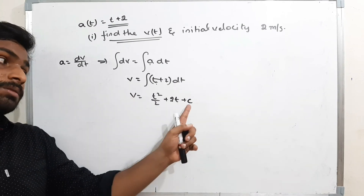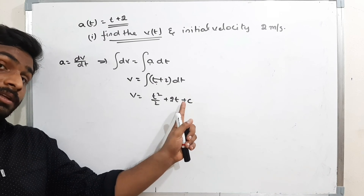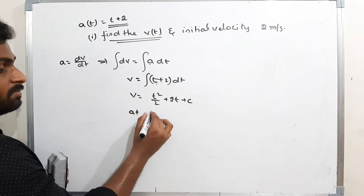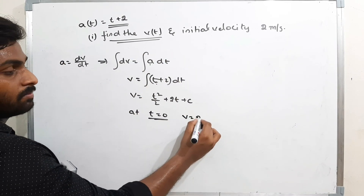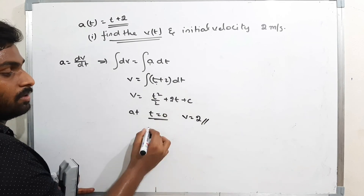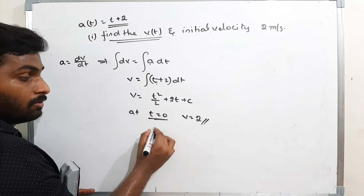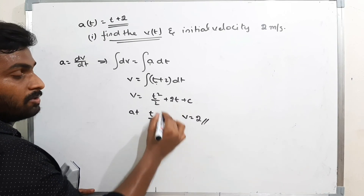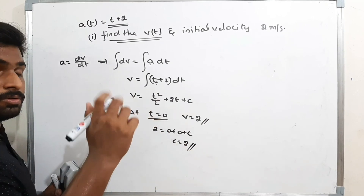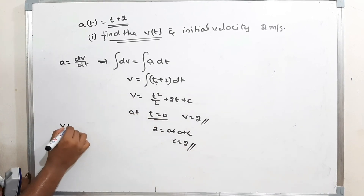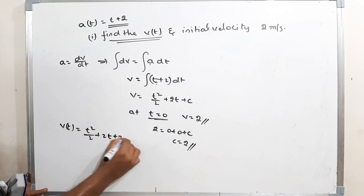At time t = 0, velocity v = 2 m/s. Substituting: 2 = 0 + 0 + C, so C = 2. Therefore the velocity equation is v(t) = t²/2 + 2t + 2.